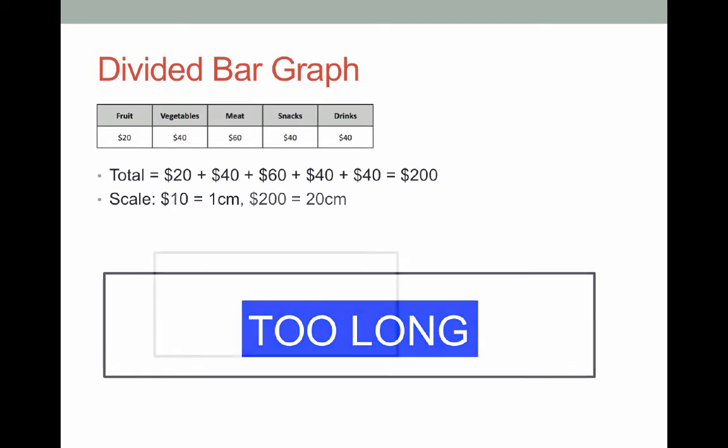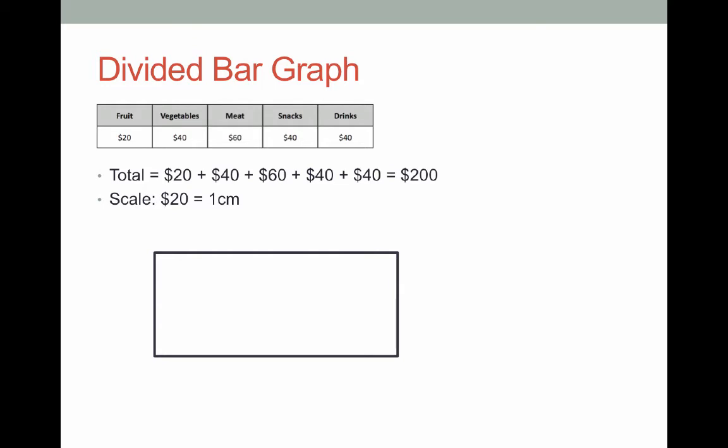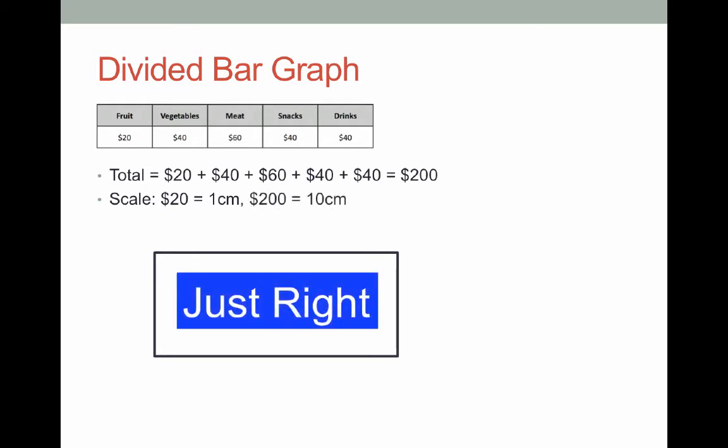So what we're going to go with here is we're going to let $20 be represented by 1 centimeter on our rectangle. This means that if I want to represent $200 I need to draw a rectangle that's 10 centimeters long. Now often I get asked how wide do you need to make your divided bar graph. I would suggest as a tip to be about 3 or 4 centimeters long. You don't want to be too wide or even too thin. So about 3 or 4 centimeters is just right.